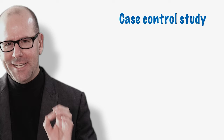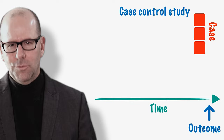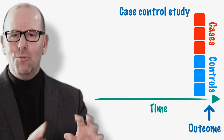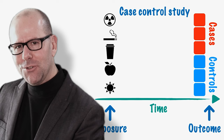Case control studies start off by collecting cases — people that have some kind of outcome of interest. Interestingly, it can be a rare outcome, which is one of the strengths of case control studies. We also want a group of controls — people that don't have that outcome. We ask both groups about their history: what might they have been exposed to in the past, and is there a difference in their exposure history that might explain the difference in outcome we're seeing today?